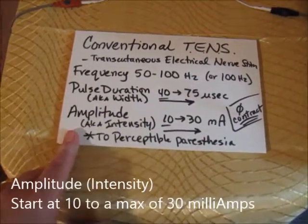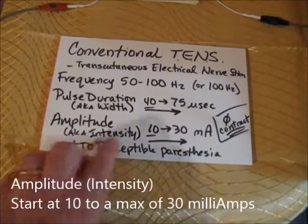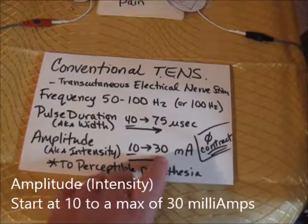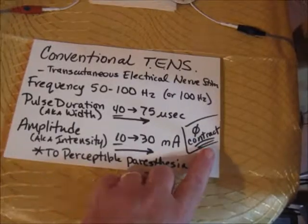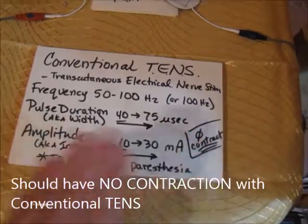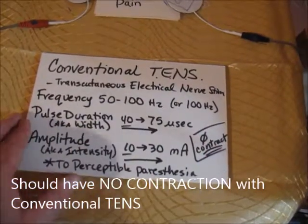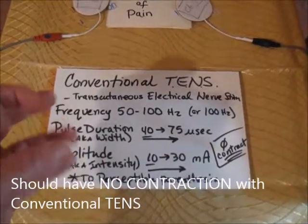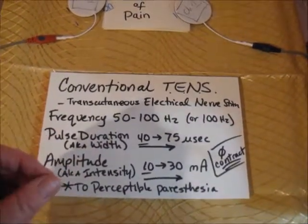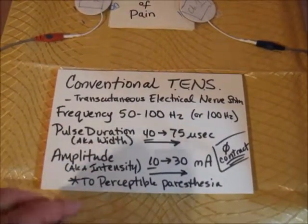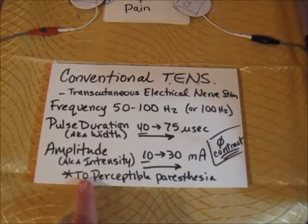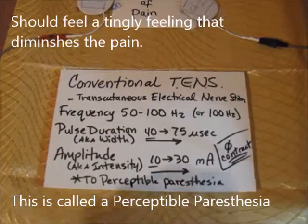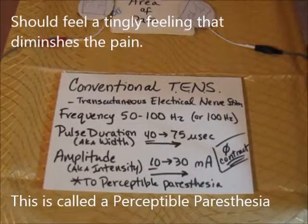For amplitude, also known as intensity, start from 10 milliamps and go up to 30. With conventional TENS you may not get a muscle contraction — this is not acupuncture-like or burst mode. This is the one for causing a tingly feeling so that back pain stops hurting and you don't need to take as many analgesics. The goal is to cause a perceptible paresthesia — a tickle, prickle, or tingly feeling.